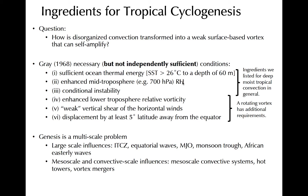Ample moisture in the location of the initial vortex must also be present. This is because amplification of the TC vortex requires release of latent heat, which can only happen if convection grows deep. Dry air inhibits vertical growth of convection, and if dry air reaches a TC core, then the cyclone weakens.